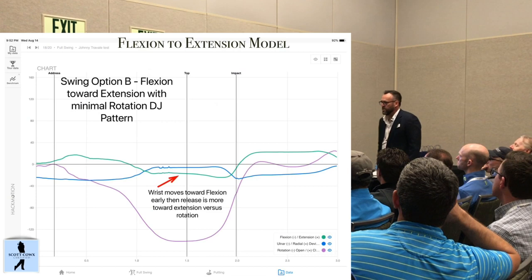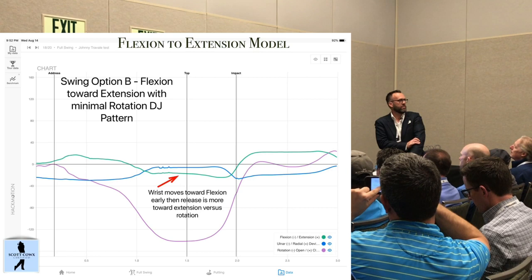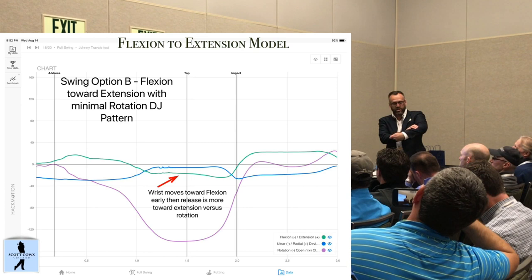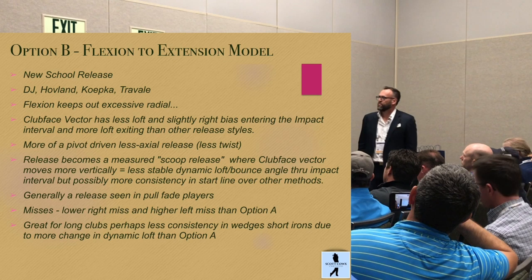Going forward a couple frames to this pattern, look at the difference in the purple. Johnny Trevally is holding his left forearm 50 degrees more open at impact than it was at setup. He's squaring up the face by allowing his wrist, which is in flexion, to go toward extension. So he is absolutely scooping this thing, technically.